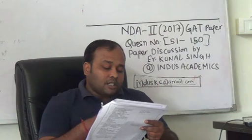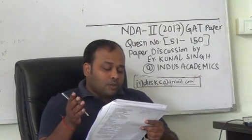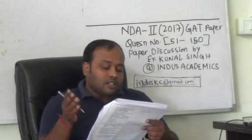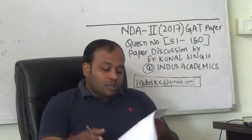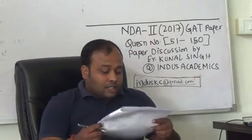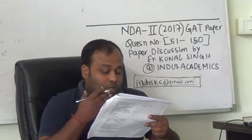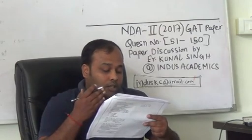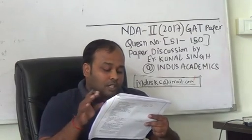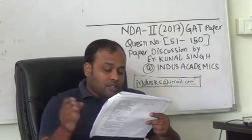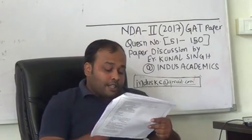Question 60: Bilaspur is in Chhattisgarh, Jodhpur is in Rajasthan, Bhopal is in Madhya Pradesh, Ranchi is in Jharkhand. You have to arrange west to east. The correct answer is B, that is 2-3-1-4: Jodhpur is westernmost, then Bhopal, then Bilaspur, and then Ranchi in the east.